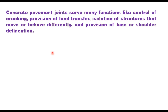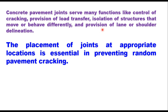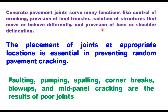Concrete pavement joints serve many functions like control of cracking, provision of load transfer, isolation of structures that move or behave differently, and provision of lane or shoulder delineation. The placement of joints at appropriate locations is essential in preventing random pavement cracking. Faulting, pumping, spalling, corner breaks, blow-ups and mid-panel cracking are the results of poor joints.